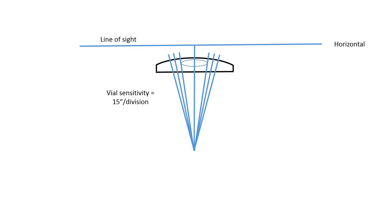Notice you've got the little blue bubble and it is centered between the division marks that we use to center that bubble. In our case here, the sensitivity of this level vial is 15 seconds of arc per division.